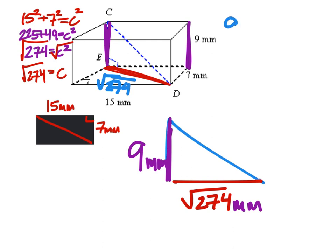So, all we've got to do is figure out what the hypotenuse is. So let's go ahead and figure that out. We've got 9 squared plus the square root of 274 squared. You guys see why that works out that way? That's C squared. The square root and the square root will cancel out.